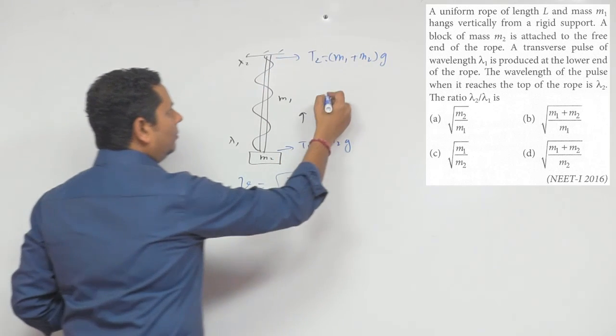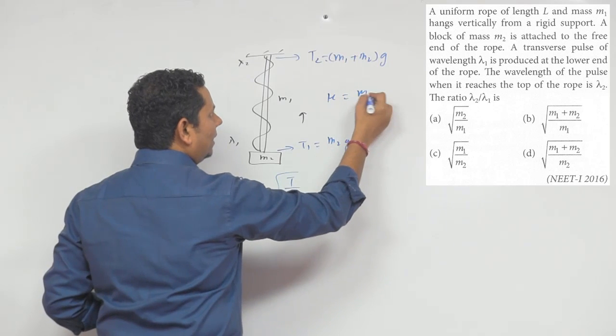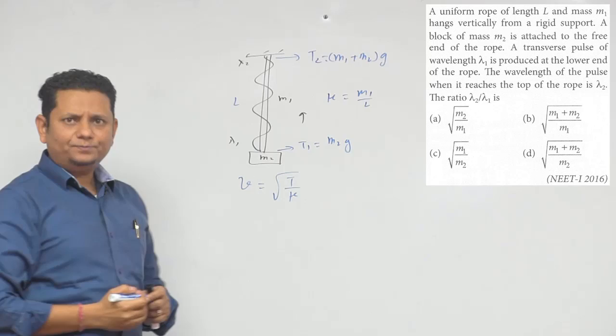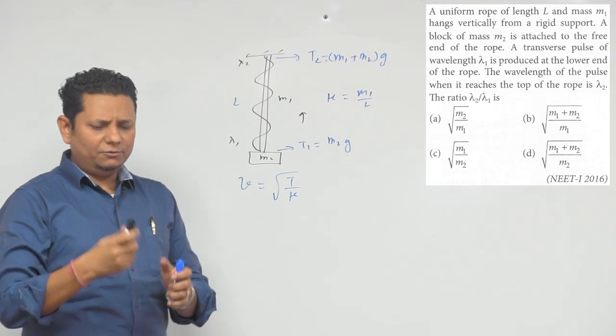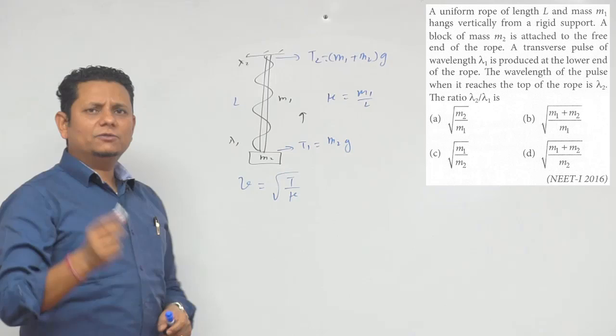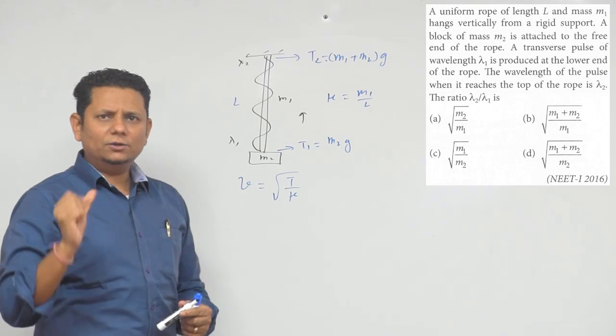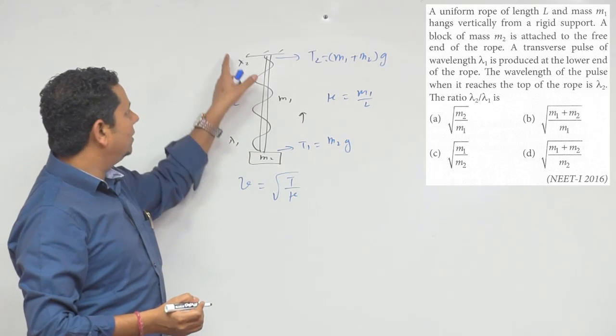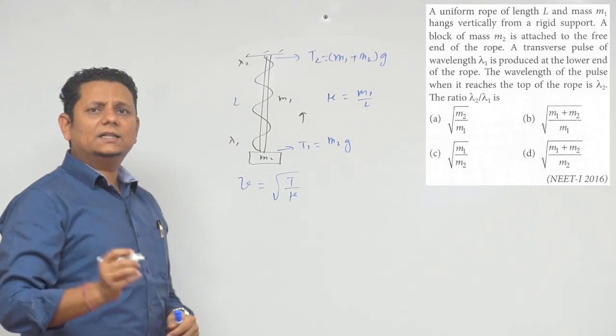If we talk about mu, the mass per unit length is M1 by L. You should know that the wave's frequency depends on the source, so the frequency will be the same throughout. However, the velocity will change and lambda will change.